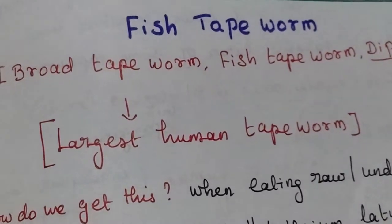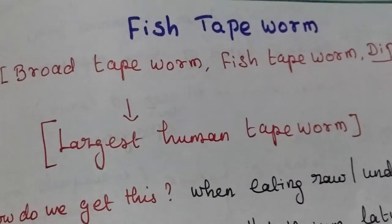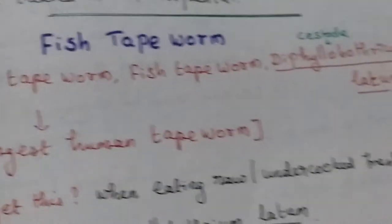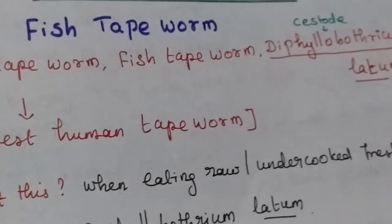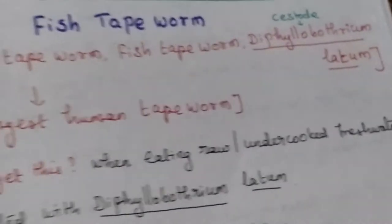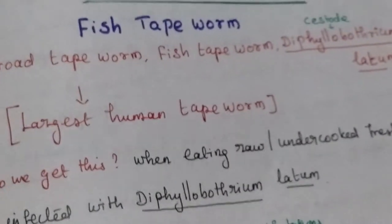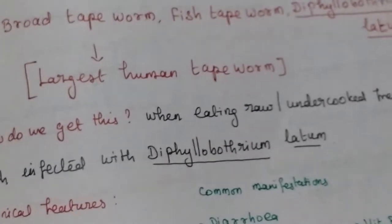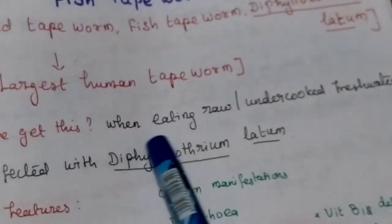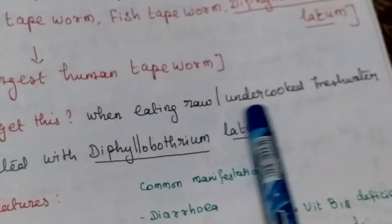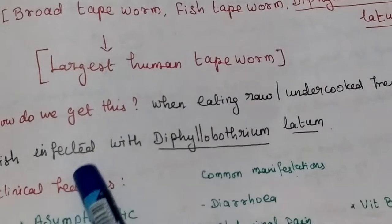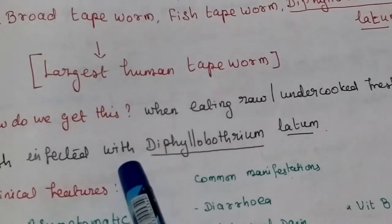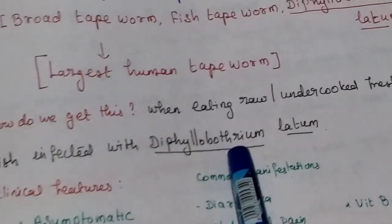Fish tapeworm, also called broad tapeworm or Diphyllobothrium latum, is the largest human tapeworm. We get this infection through eating raw or undercooked freshwater fish that is infected with Diphyllobothrium latum.